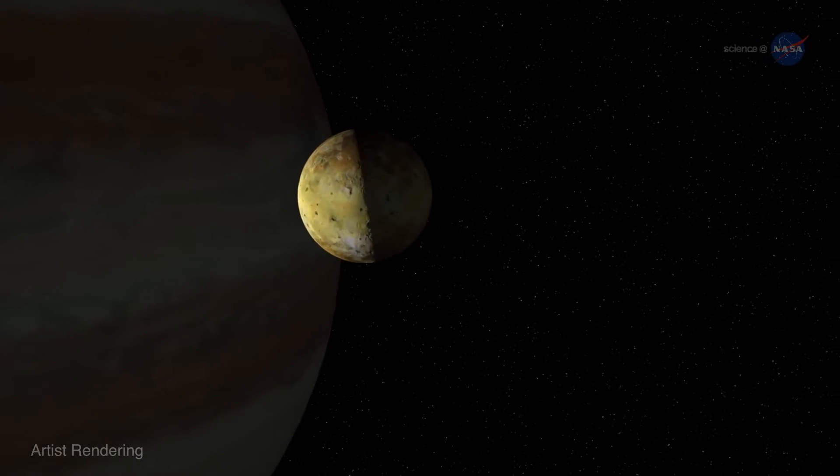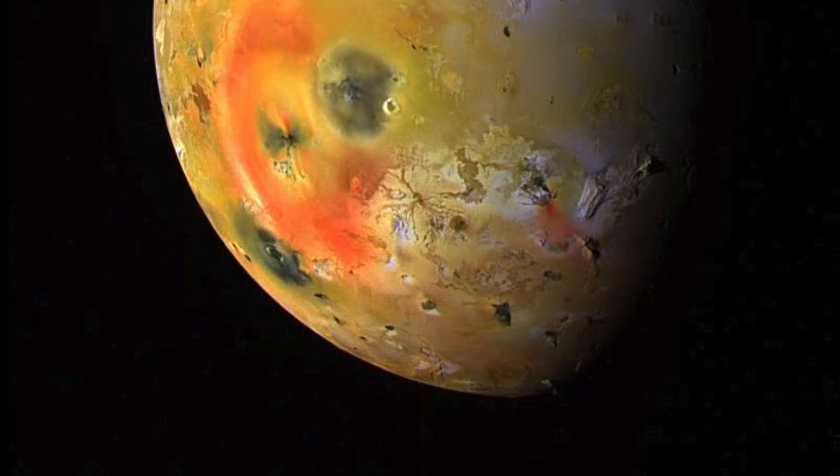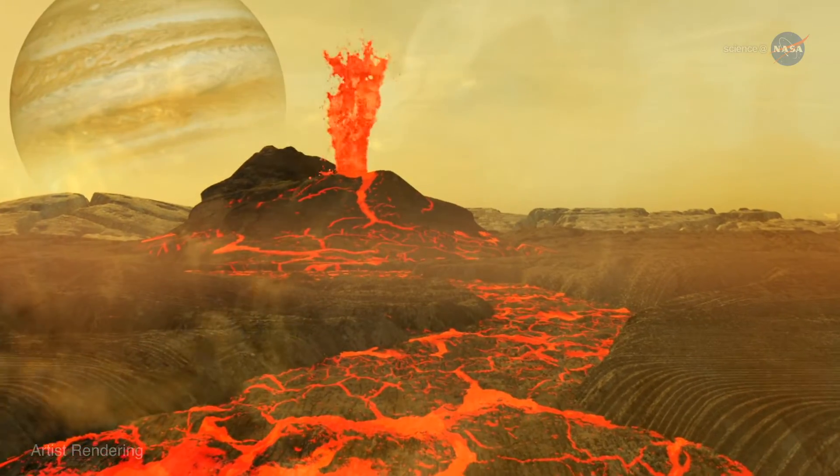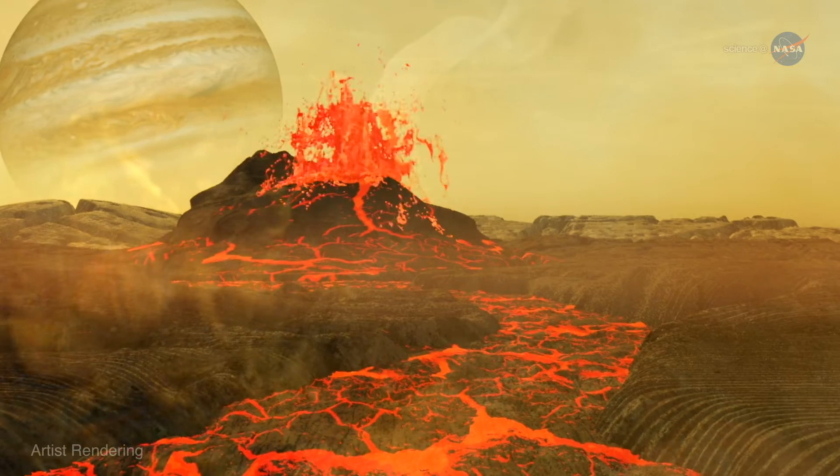Io, the closest Moon to Jupiter, is the most volcanic world in the Solar System. Io experiences so much tidal forces that the Moon practically boils from inside.